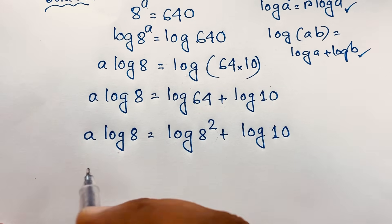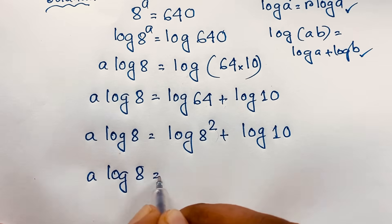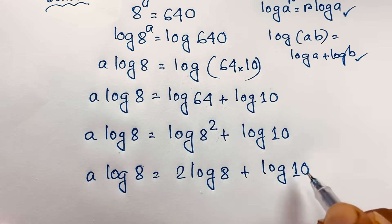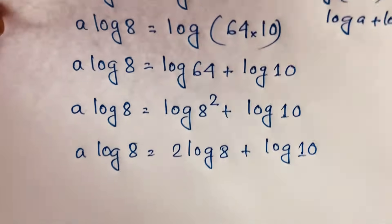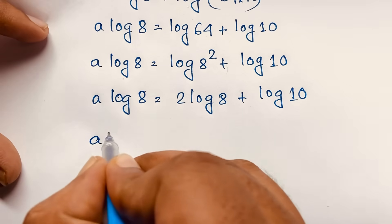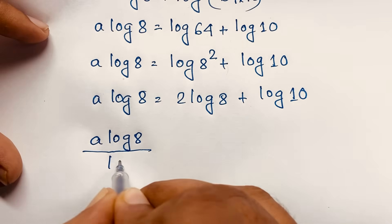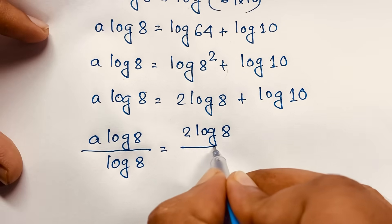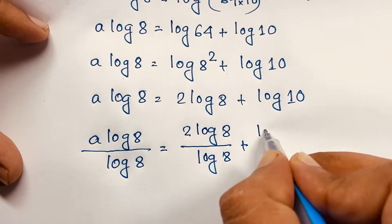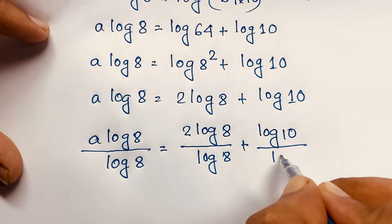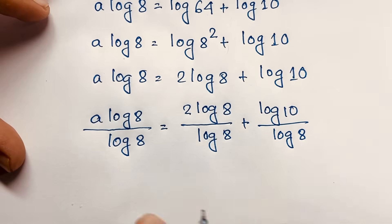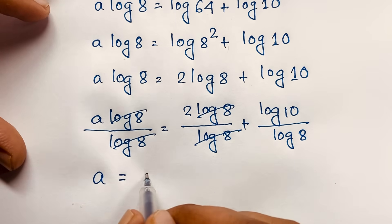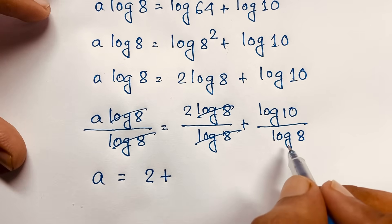Now we have a·log8 = 2·log8 + log10. Dividing both sides by log8, the log8 terms cancel: a = 2 + log10/log8.